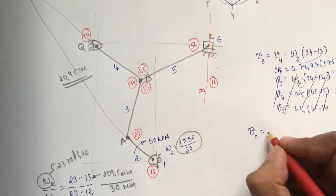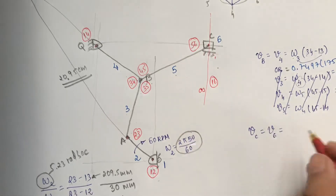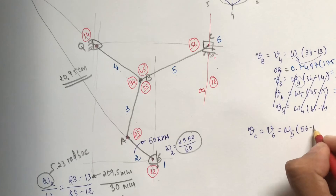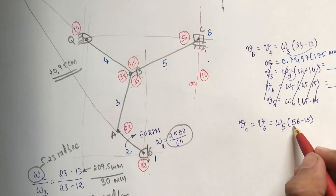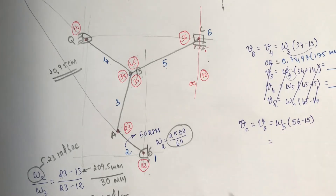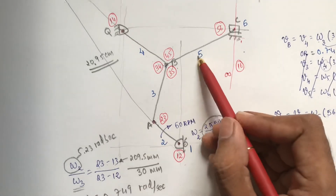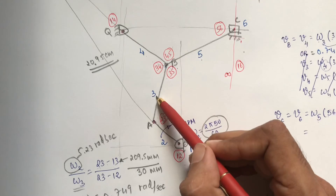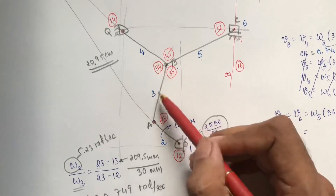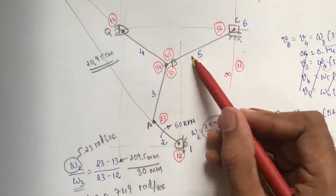For velocity at C: C is the slider (link 6). Velocity of link 6 = omega_5 × distance(5-6 to 1-5). We need omega_5 first. Since links 3 and 5 are connected and we have omega_3, use: omega_3 / omega_5 = distance(3-5 to 1-5) / distance(3-5 to 1-3).